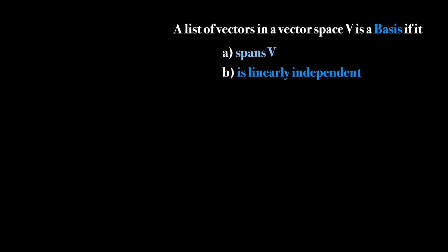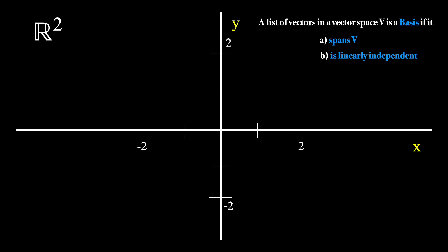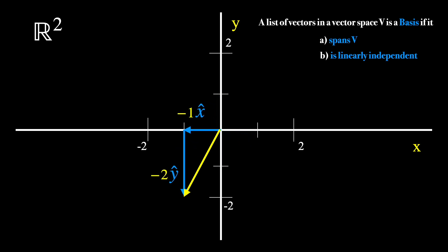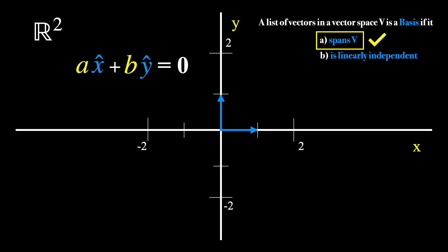To let all that sink in, let's consider a simple example. We'll take a look at the Cartesian plane, or from a linear algebra perspective, the vector space of R2. The standard basis of this vector space is i-hat and j-hat — the vectors that have length one in the x direction and y direction, also frequently called x-hat and y-hat. This is a basis because any vector in R2 can be written as a linear combination of the two, with the appropriate scalars coming from the real numbers. So these two vectors span the entire space. They are also linearly independent since the only way to satisfy this equation is to take a equals zero and b equals zero.